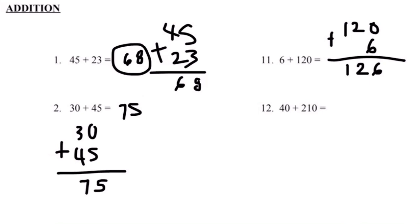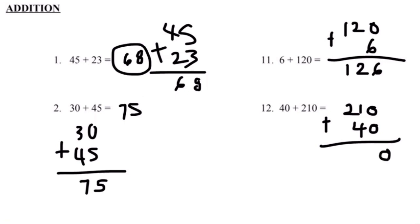Our last problem, number 12: 40 plus 210. Let's align the numbers vertically so it's easy for us to solve. 210 plus 40 — 0 plus 0 equals 0, and 4 plus 1 equals 5. If we bring down the 2, our final answer is 250. 40 plus 210 equals 250.